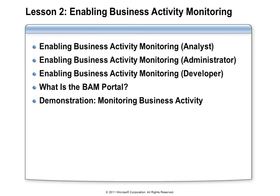Let's talk about what it takes to enable BAM in our applications. The process will start with the business analyst creating a list of data they would like to see collected and the format in which they would like to see it presented — known collectively as a BAM definition. Once complete, a BizTalk administrator can deploy that BAM definition to a BizTalk environment. Then it will be up to a developer to use the Tracking Profile Editor to configure the interceptors. Note that the WF and WCF interceptors cannot be configured with the Tracking Profile Editor — you can see details of what is required by looking at the notes for Module 17.